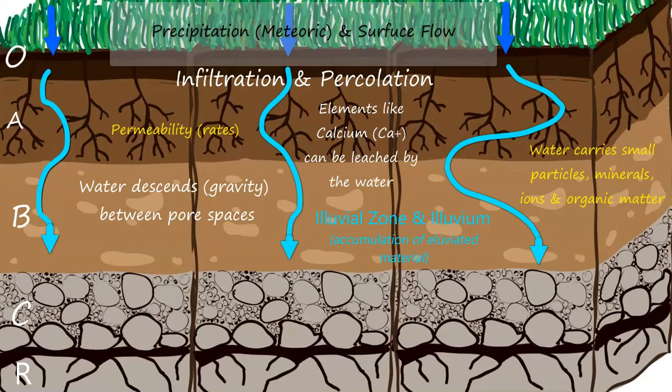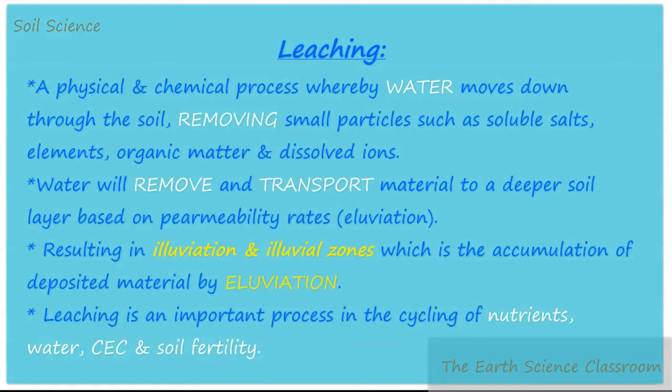So leaching means the removal of material with water—generally ions, elements, soluble salts, clay, and minerals—that have been chemically weathered through hydrolysis or mechanically moved by the water's force. It takes particles from a layer and translocates them deeper into the lower soil layers. That is what leaching means.